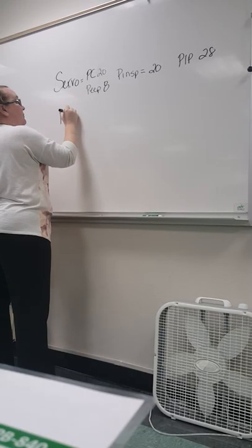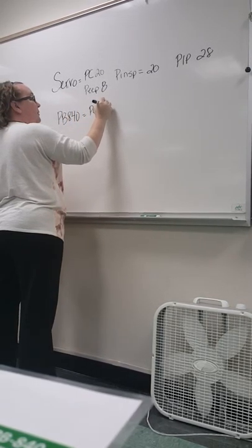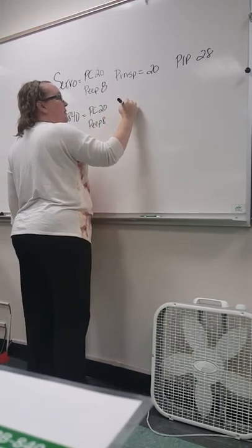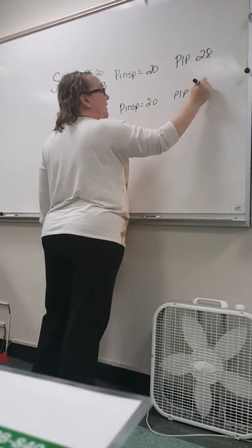On the PB, pressure control is 20, PEEP is 8. What are you going to set your P-inspiratory at? 20. And what's your PEEP going to equal? 28. 28.